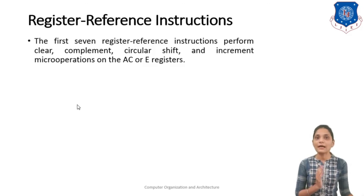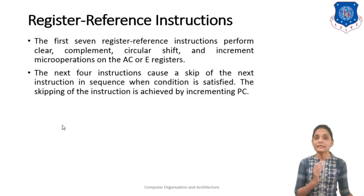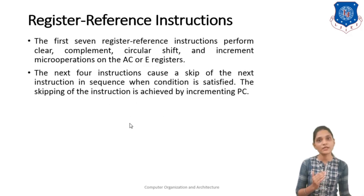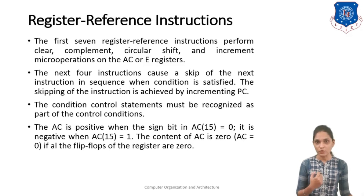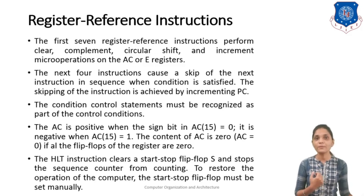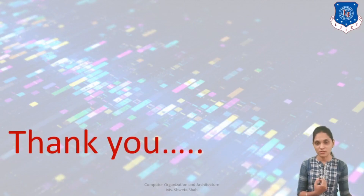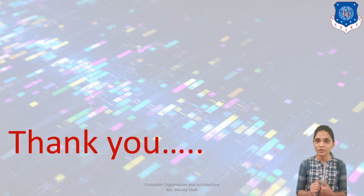The first 7 register reference instructions perform clear, complement, and circular shift or increment operations on the accumulator or E register. The next 4 instructions skip the next instruction when a specified condition is met, achieved by incrementing the program counter by 1. The HLT instruction clears the start-stop flip-flop and stops the sequence counter from counting; to restore operation, the flip-flop must be set manually. In total there are 12 register reference instructions, each with one specific bit set in the address field. This concludes today's session.